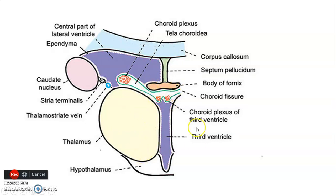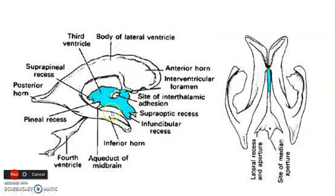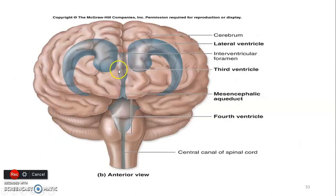The third ventricle communicates with the lateral ventricle through the interventricular foramen of Monro. As structures bud from the diencephalon, they carry part of the third ventricle canal with them, forming recesses: the pineal recesses, suprapineal recesses, supraoptic recesses, and infundibular recesses. These extensions contain CSF. The third ventricle is interrupted at the center by the interthalamic adhesion, which connects the right thalamus to the left thalamus.